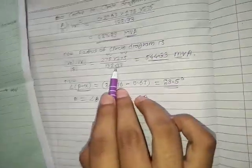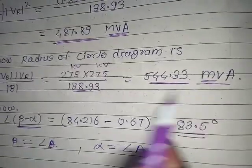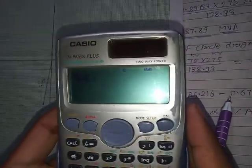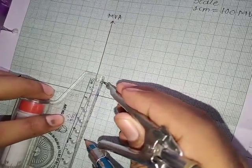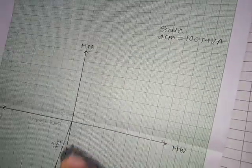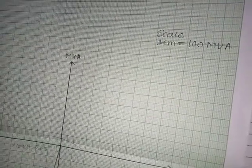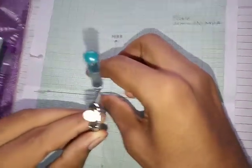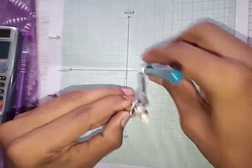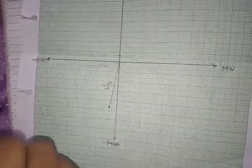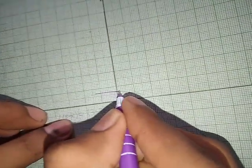Now we draw the circle. The radius in centimeters is 544.33 / 100 = 5.44 cm. Setting the compass to 5.44 cm from the center of the circle, I draw the semicircle on the graph paper. The semicircle passes through the line as expected.